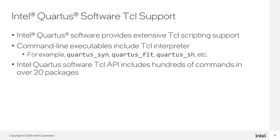The Intel Quartus software provides extensive Tickle scripting support. Support ranges from basic commands for making settings and assignments to advanced commands to access internal data structures. Almost everything you can do in the GUI you're also able to do through Tickle. Most command line executables include a complete Tickle interpreter and provide access to the Intel Quartus Prime Software Tickle API, which includes hundreds of commands and over 20 packages. More detailed information about executables and packages is available in printed documentation on the Intel FPGA website.